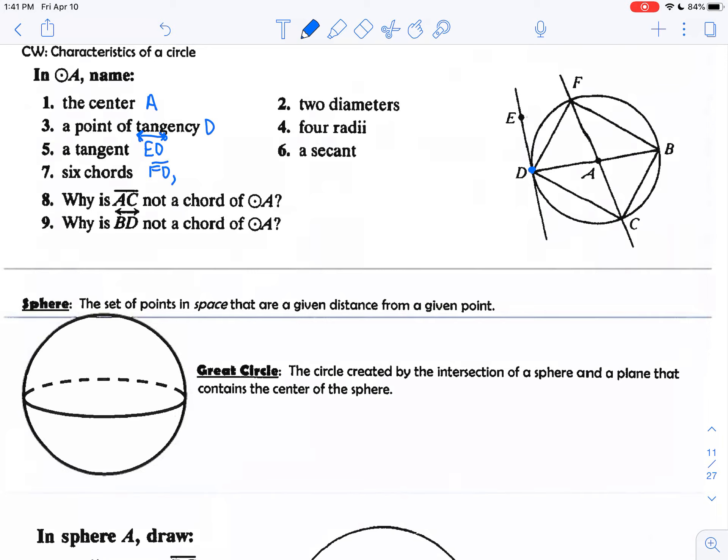Six chords. Since chords are segments, I'm going to write that as segment FD, FB, DC, and CB. The other two are special chords, they're the diameter chords, but DB would also be considered a chord and FC. On number two, they did ask for the two diameters, so I'm going to list that out: DB, FC.